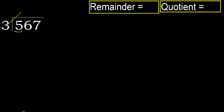Multiply by which number is nearest to 5 but not greater? 3. Multiply by 2 is 6. 6 is greater. Multiply by 1 is 3. It's not greater. Okay, subtract. 5 minus 3 is 2. Next, 26.